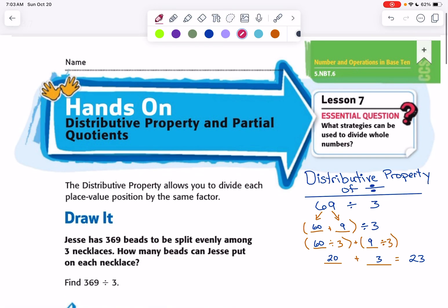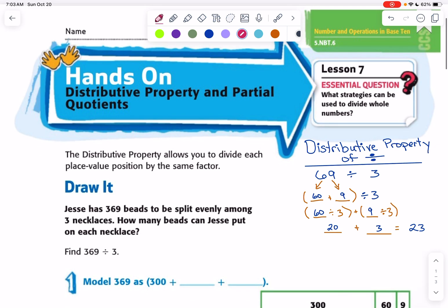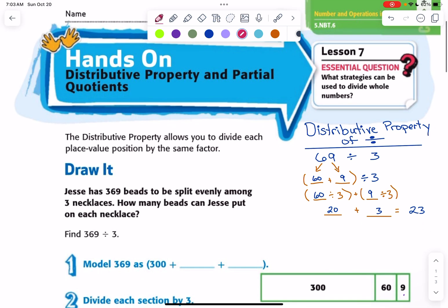Hello fifth graders. Today we are working on Chapter 3, Lesson 7. We're thinking about how the distributive property and partial quotients can each help us to find the quotient to a division problem.